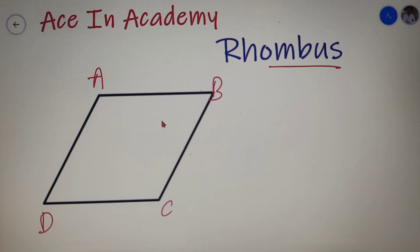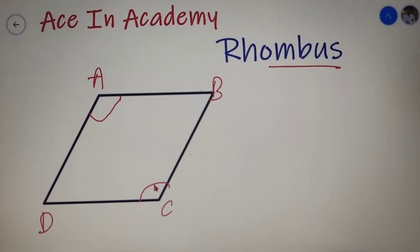The second property of a rhombus is that opposite angles of a rhombus are equal. So angle A and angle C are equal, and angle D and angle B are equal.